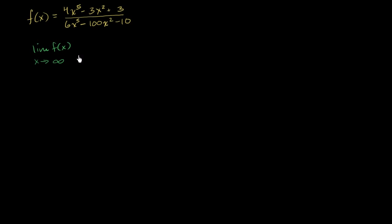There are several ways you could do this. You could try to plug in larger and larger numbers for x and see if it seems to be approaching some value, or you could reason through this. When I talk about reasoning through this, it's to think about the behavior of this numerator and denominator as x gets very large.